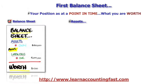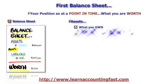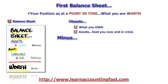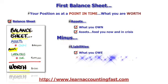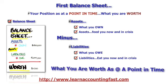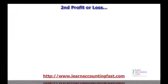A balance sheet is made up of assets — what you own. Assets can feed you now and in a crisis. Minus your liabilities — what you owe. Liabilities will eat you, now and in a crisis. And this equals what you're worth as at a point in time.